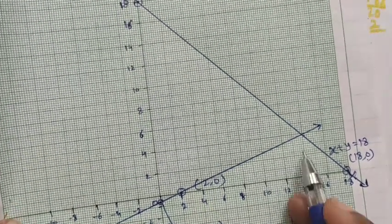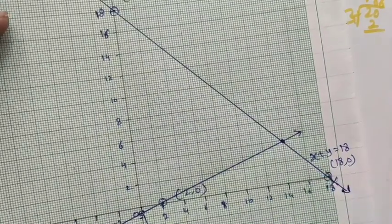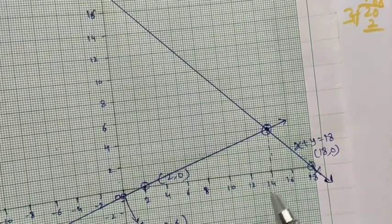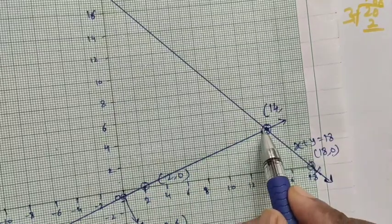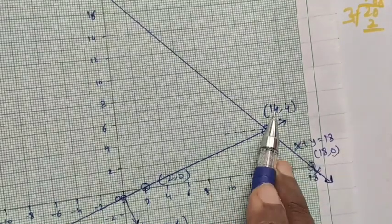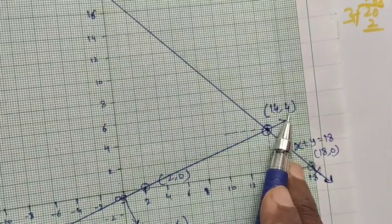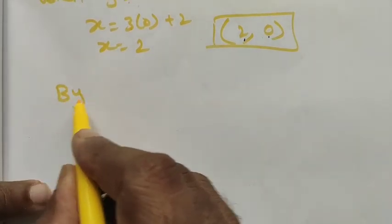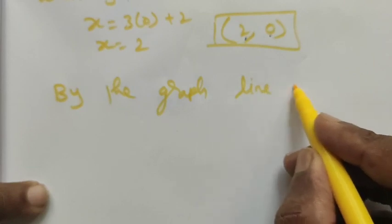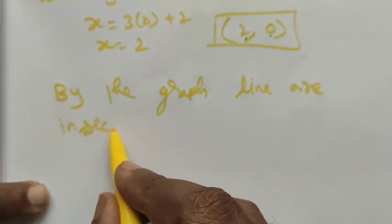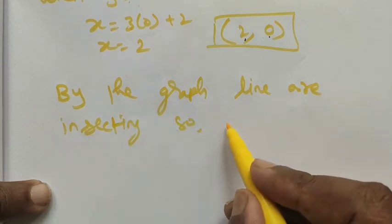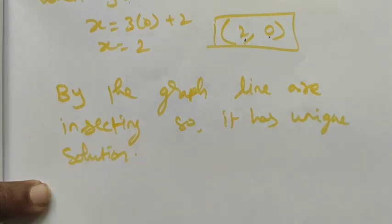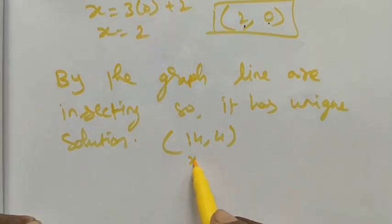This straight line is the equation x = 3y + 2. See where the two lines intersect — the intersection point has x = 14 and y = 4. So the solution set is x = 14, y = 4. Since the lines intersect, there is a unique solution: (14, 4).